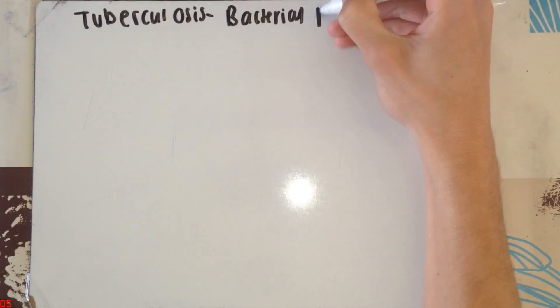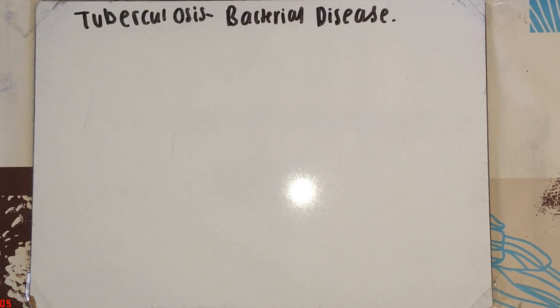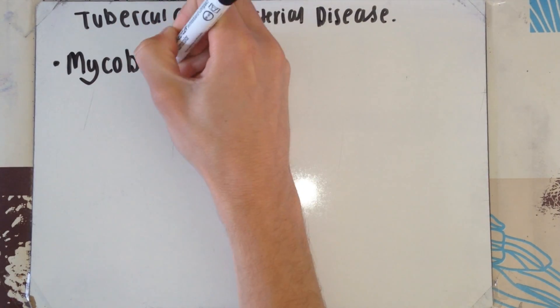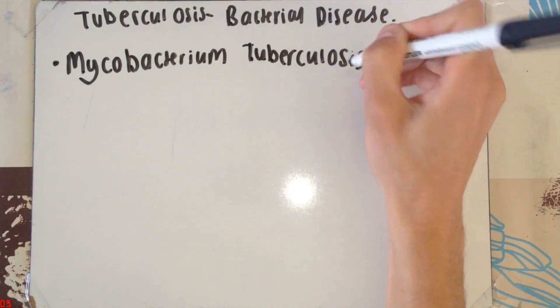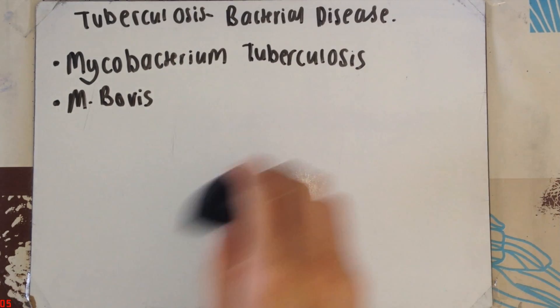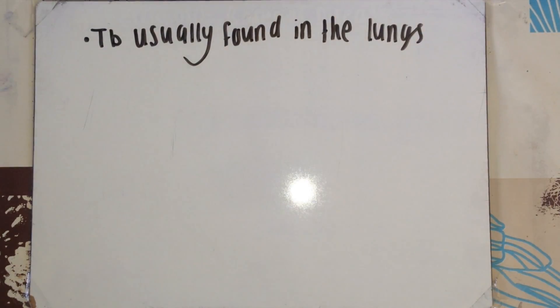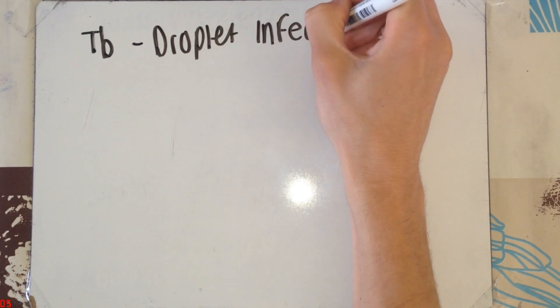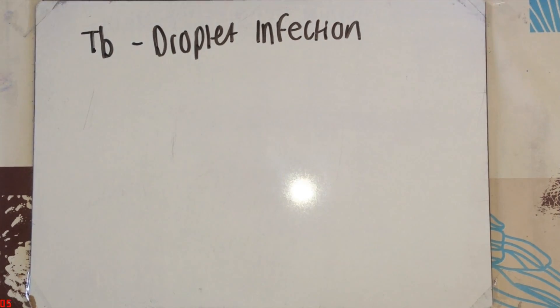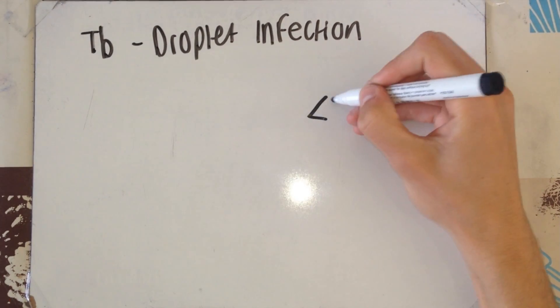Now I'm going to talk about tuberculosis. This is a bacterial disease. This disease is caused by two pathogens: Mycobacterium tuberculosis and Mycobacterium bovis. TB is usually found in the lungs. How does one individual give another individual tuberculosis? It's done through the spread of the Mycobacterium tuberculosis. This is done by droplet infection.